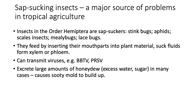Sapsucking insects are a significant issue in tropical agriculture. These are pests of many of our crops where they cause quite a diverse range of types of damage. All the sapsucking insects are in the order Hemiptera. It includes the true bugs, for example stink bugs. It also includes aphids, scale insects, mealybugs, and lacebugs.